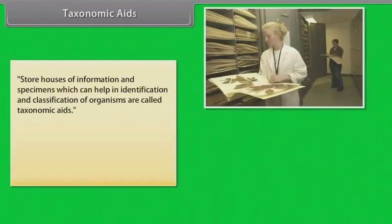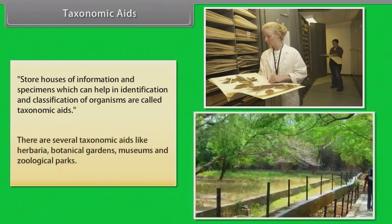Storehouses of information and specimens which can help in identification and classification of organisms are called taxonomic aids. There are several taxonomic aids, such as herbaria, botanical gardens, museums, and zoological parks.